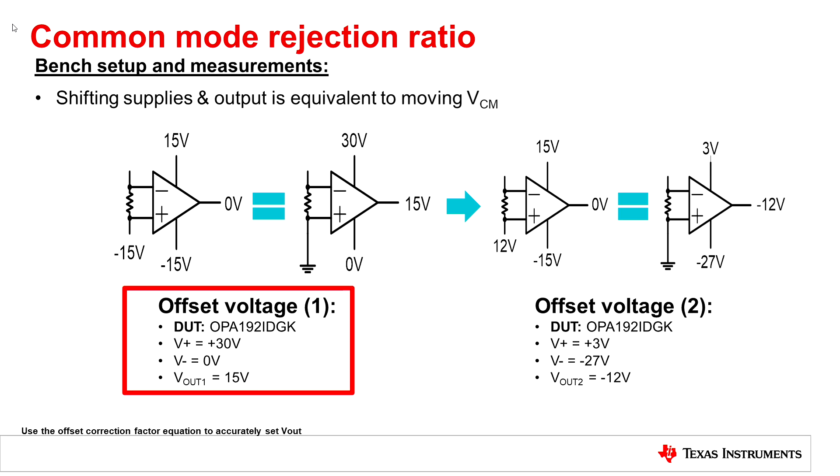For offset voltage number one, the supply conditions will be positive 30 volts and zero volts. Remember, the output must be at mid-supply, in this case, 15 volts. For offset condition number two, the supply conditions will be positive 3 volts and negative 27 volts, with the output at mid-supply at approximately negative 12 volts. Now let's verify common mode rejection ratio of a linear amplifier as defined by the TI datasheet.